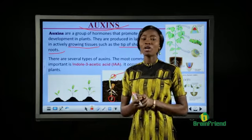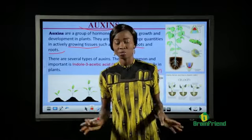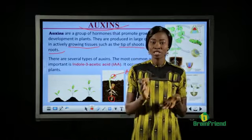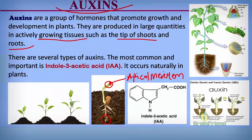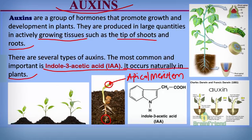There are different types of auxins. The most common and most important is indole-3-acetic acid, commonly abbreviated as IAA. Indole-3-acetic acid is the most common, so whenever we talk about auxin we usually refer to IAA. Indole-3-acetic acid occurs naturally in plants — it is not synthetic, it is found naturally in plants.